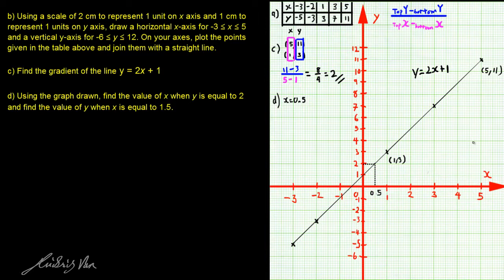To find the value of y when x is equal to 1.5, all we have to do is to draw a dotted line from x equals to 1.5 to our straight line. And from the line to the y-axis, and we should get y is equal to 4.